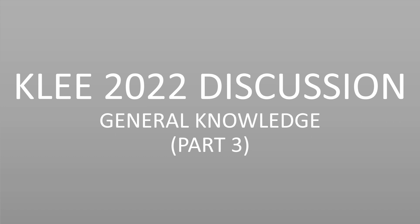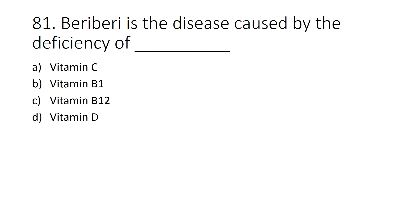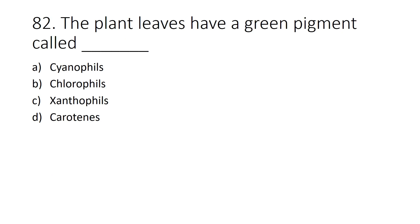Question 1 and 14: Plant leaves have a green pigment called dash. Option A: Sinophylls, Option B: Chlorophylls, Option C: Xanthophylls, Option D: Carotenes. Answer: Option B. Chlorophylls. Green pigment in plant leaves is called chlorophylls.